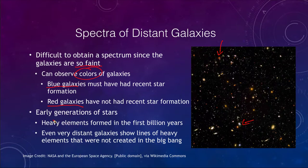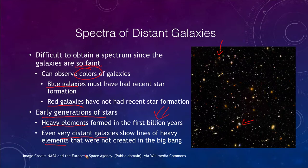This tells us about the early generations of stars and that heavy elements formed in the first billion years of the history of the universe. It did not take a long time for heavier elements to develop. We know they did not form in the Big Bang, but they formed relatively quickly once they did. We know this because even very distant galaxies show spectral lines of heavy elements — anything that is not hydrogen or helium — which were not created in the Big Bang.